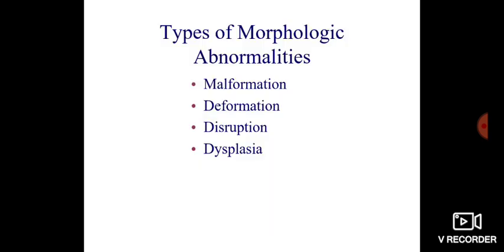Types of morphologic abnormalities are malformation, deformation, disruption, and dysplasia. Now let's come into the definitions of each.